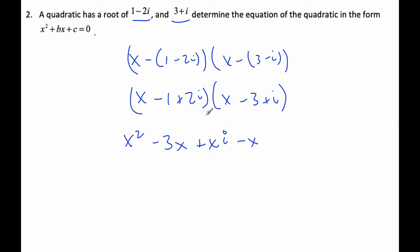I get negative x plus 3 minus i times 2i, so I get plus 2ix minus 6i, and then plus 2i squared.